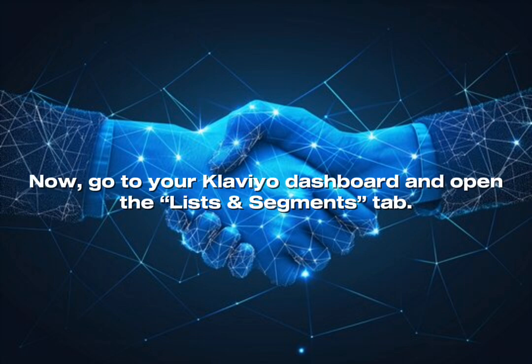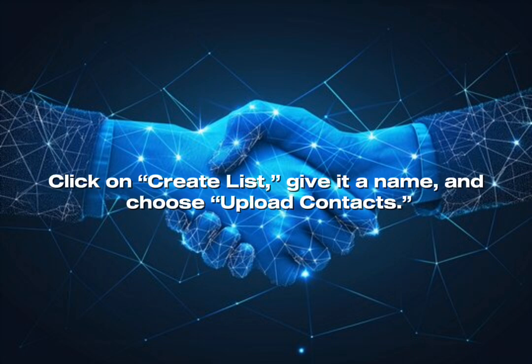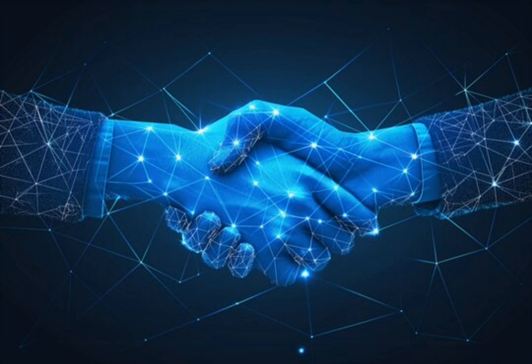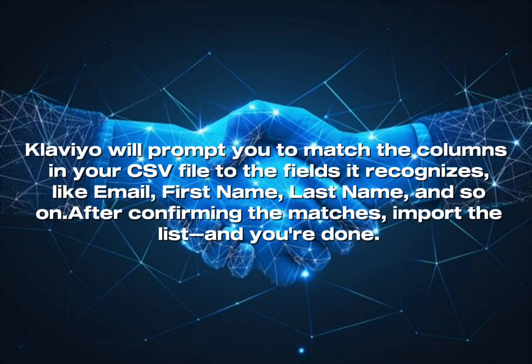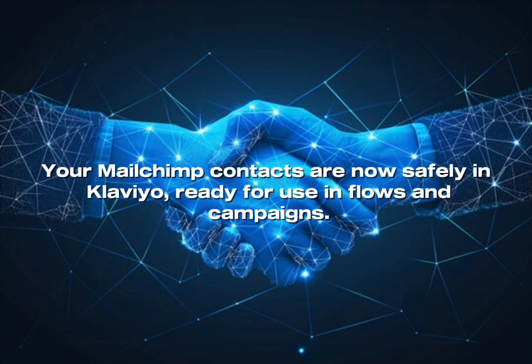Now, go to your Klaviyo dashboard and open the Lists and Segments tab. Click on Create List, give it a name, and choose Upload Contacts. Upload the CSV you just downloaded. Klaviyo will prompt you to match the columns in your CSV file to the fields it recognizes, like email, first name, last name, and so on. After confirming the matches, import the list and you're done. Your Mailchimp contacts are now safely in Klaviyo, ready for use in flows and campaigns.